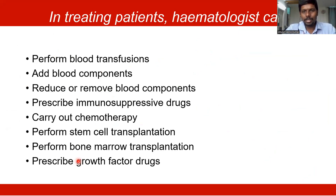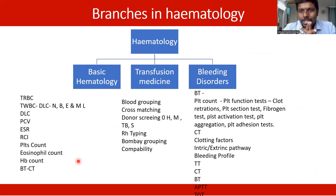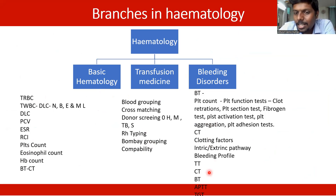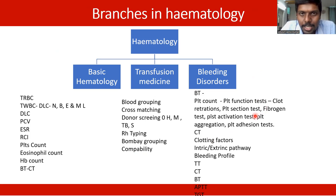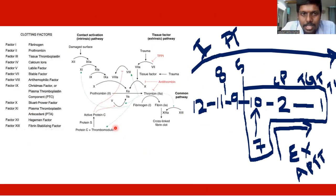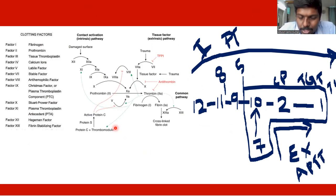In today's lecture we discussed: the branches of hematology — basic hematology (TBC, DLC, PCV, ESR, etc.), transfusion medicine (blood grouping, cross-matching, donor screening, Rh typing, Bombay grouping, compatibility test), and bleeding disorders (BT, CT, APTT, PT, TGT, and platelet function tests such as clot retraction, secretion, fibrinogen, activation, aggregation, and adhesion tests). We then covered the hemostatic mechanism — from blood vessel damage through platelet activation to fibrin clot formation — and the coagulation pathways and clotting factor deficiencies. Tomorrow's lecture will cover specific lab tests for identifying clotting and bleeding disorders.